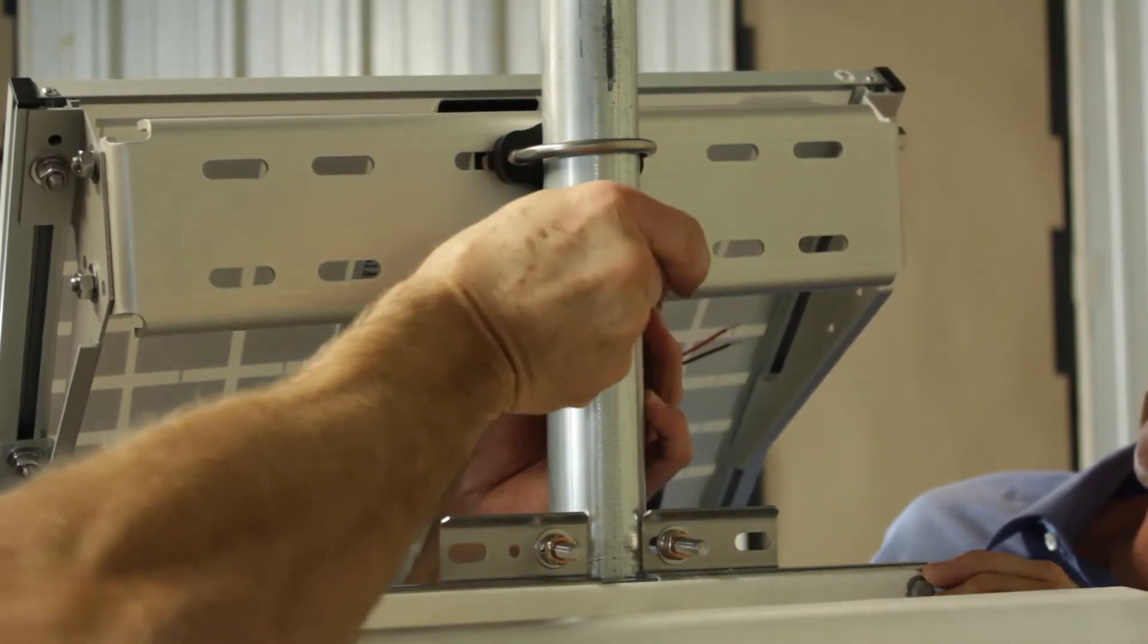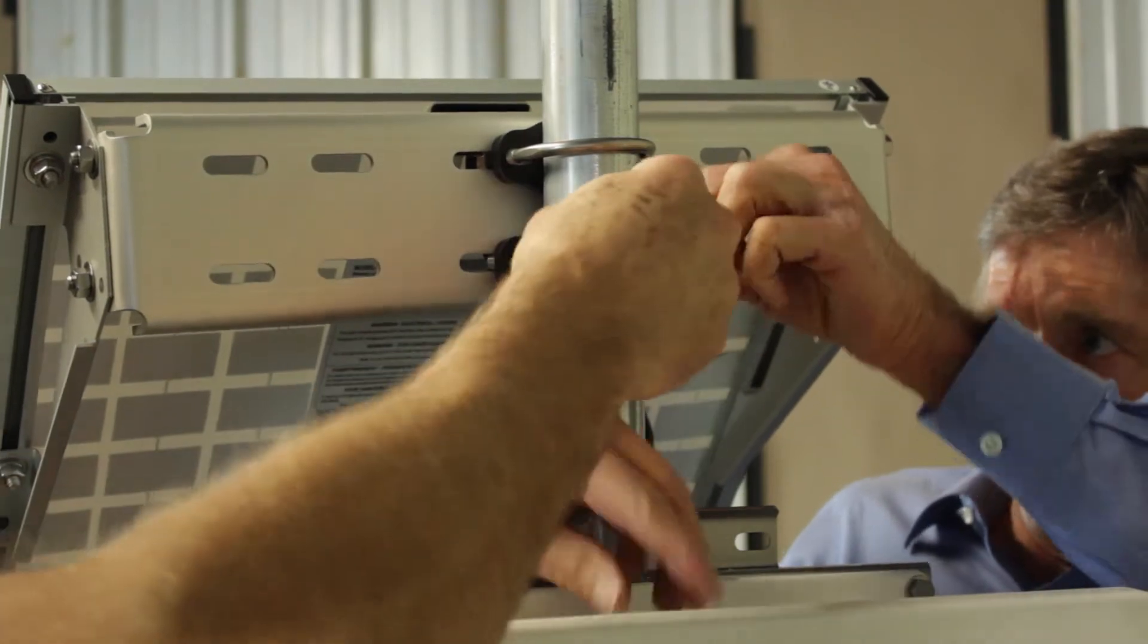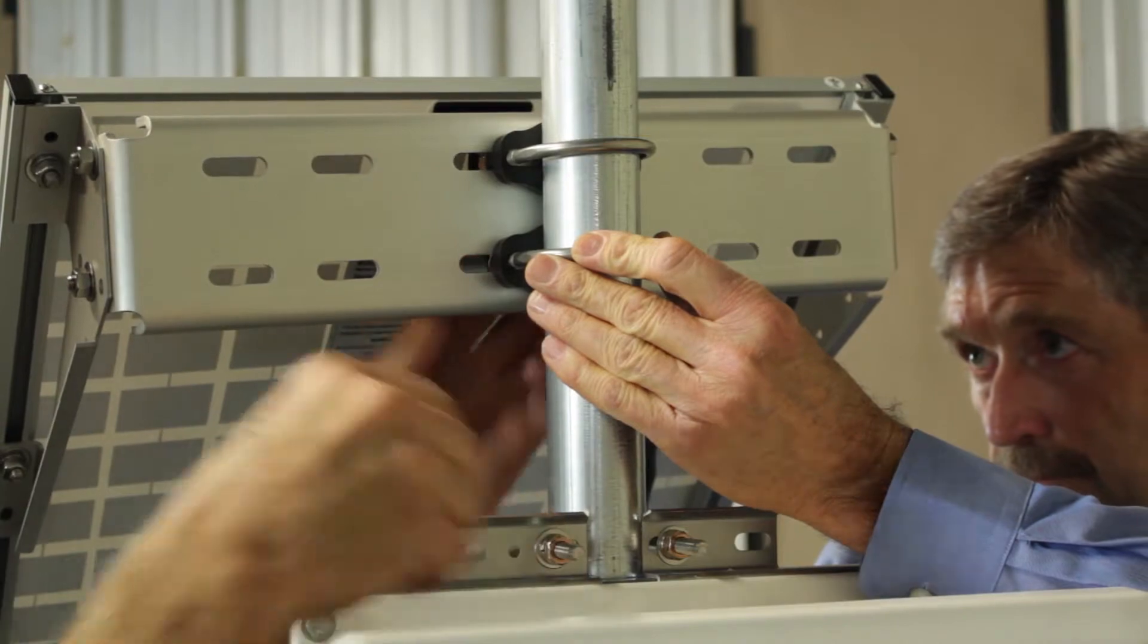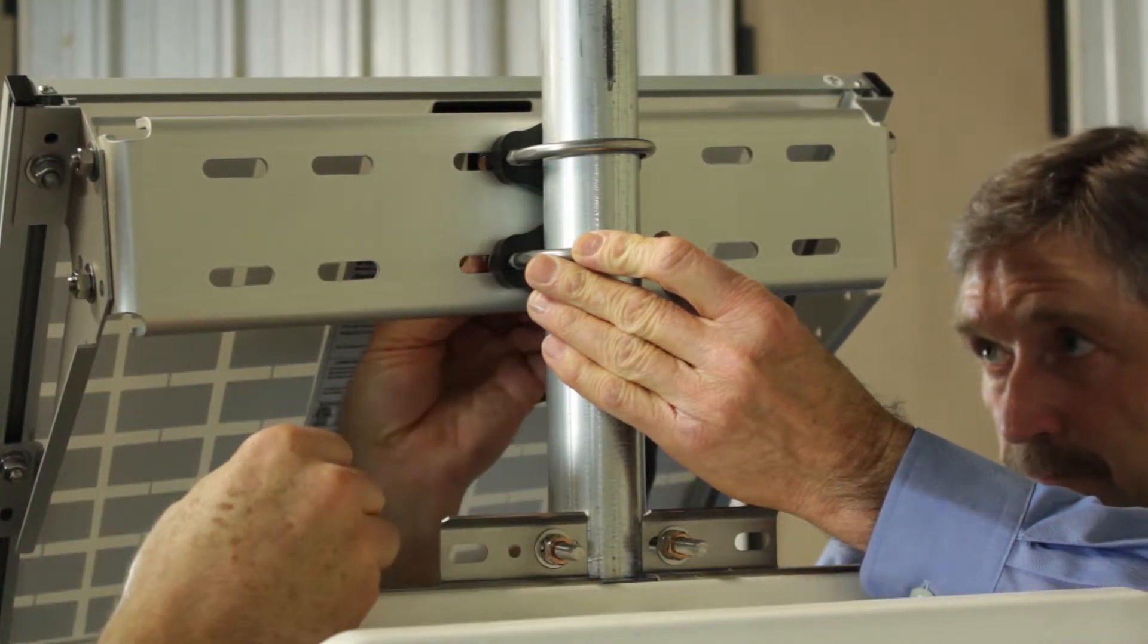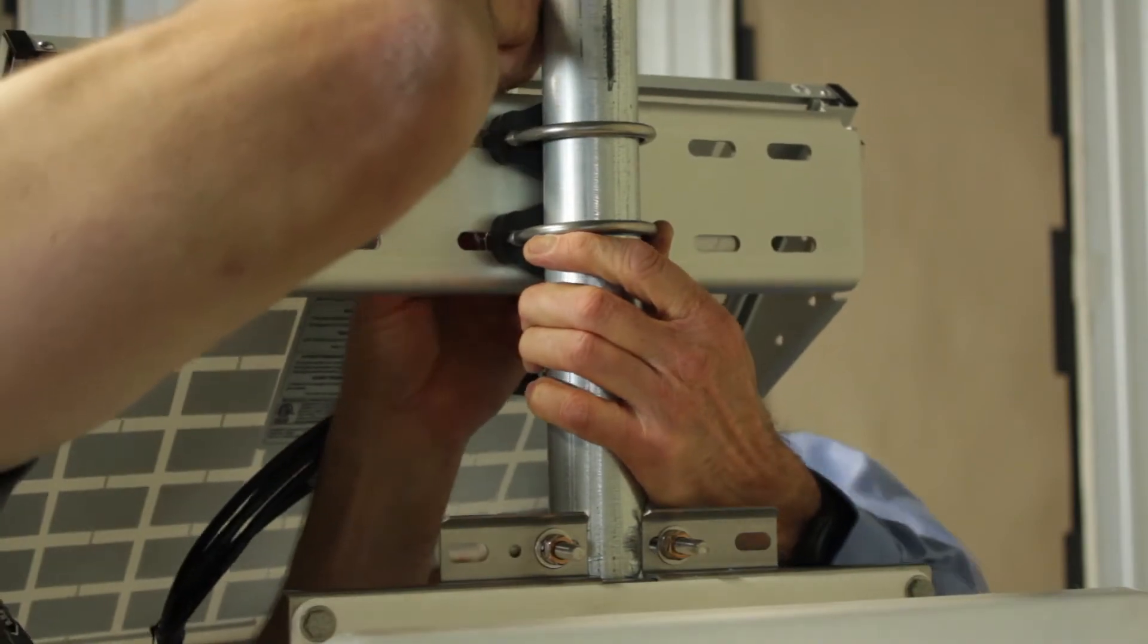Repeat for a second U-bolt passing through the lower set of holes. Ensure the solar panel is aligned to the equator, then tighten both U-bolts.